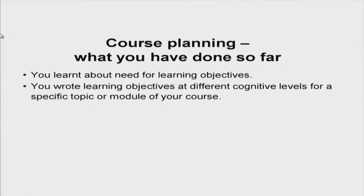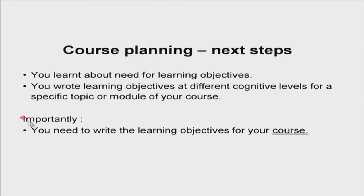What you have done in terms of course planning so far: we started by discussing the need for learning objectives, started with the mismatch between teacher and student. Then you wrote learning objectives for a topic in your course. Today you wrote learning objectives at various cognitive levels for a specific topic or unit. The next step of course planning is to think about learning objectives for the entire course, at the course level.